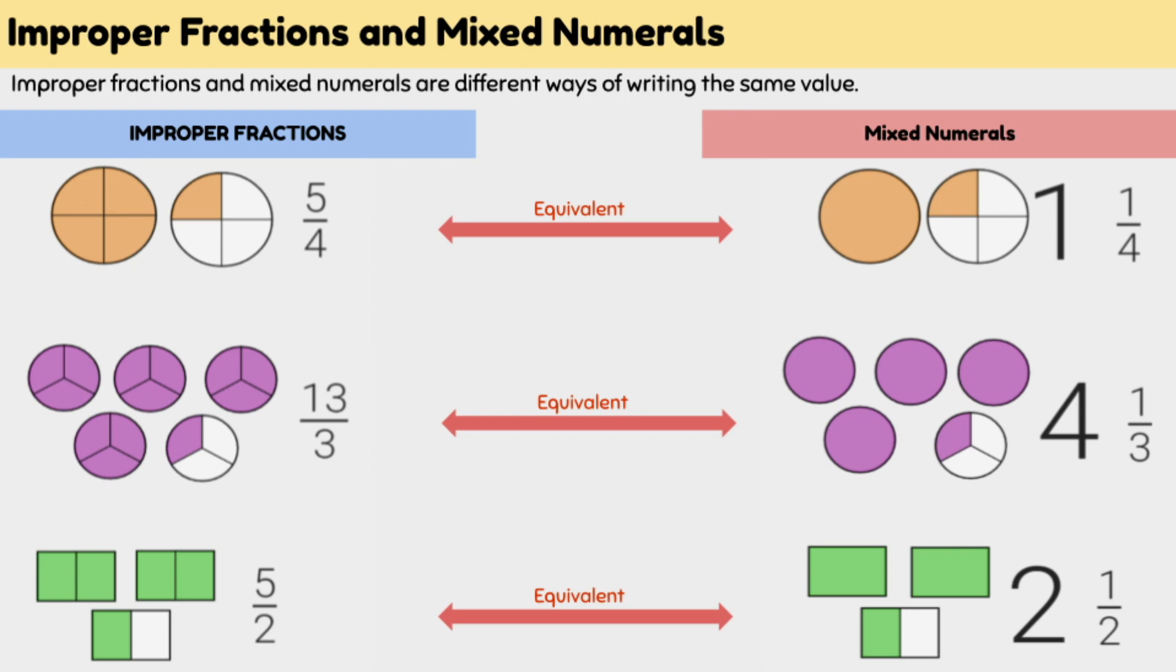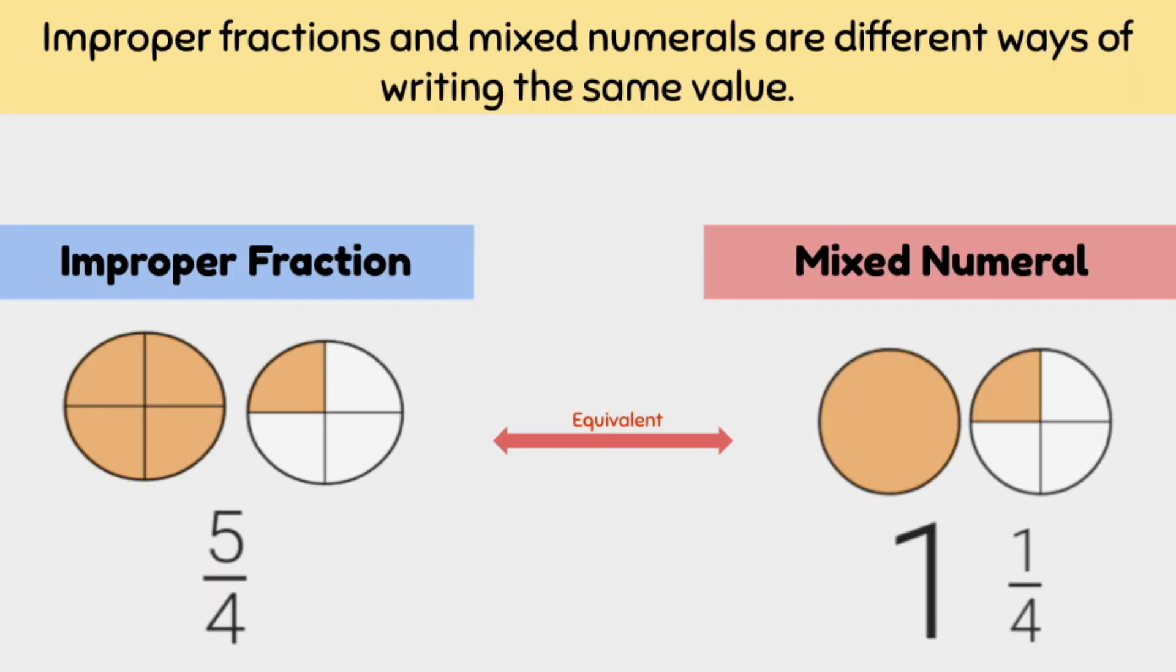For example, in this first picture we have two pizzas cut into four slices. If the orange shaded slices are the pieces I ate, we could say that I have eaten five slices, or we could also say that I have eaten one whole pizza and one slice.